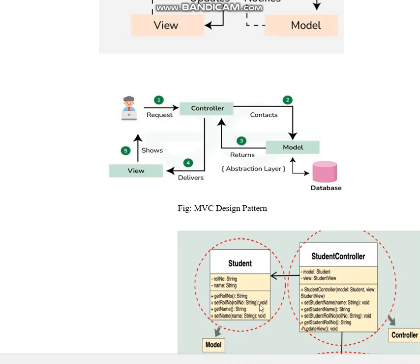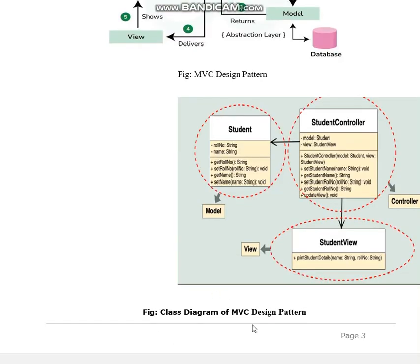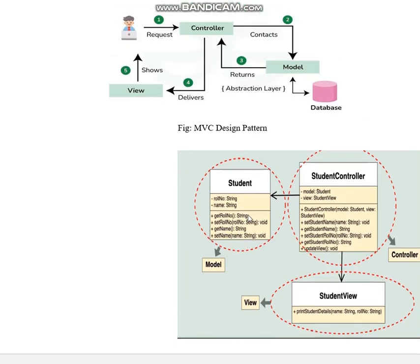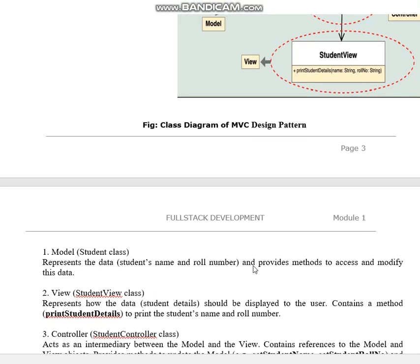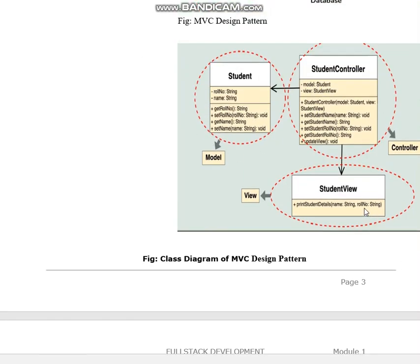For the class diagram example of MVC: the Student represents the Model, showing role number and name. The StudentView represents how data should be displayed to the user, containing a method to print student details such as name and role number. The StudentController acts as an intermediary between the Model and the View, containing references to both model and view objects and providing methods to update the Model and update the View.